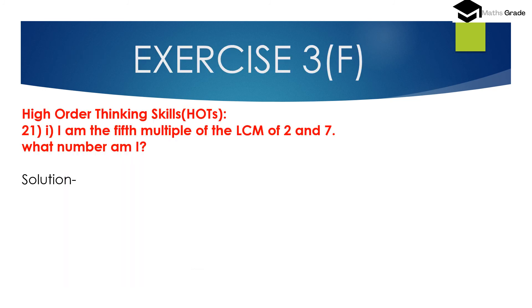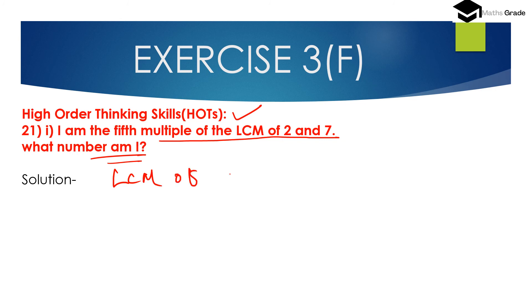Question number 21, first bit. High Order Thinking Skills (HOTS) question: 'I am the 5th multiple of the LCM of 2 and 7. What number am I?' To find this, first find the LCM of 2 and 7. Since 2 and 7 are coprime, LCM of 2 and 7 is 2 multiplied by 7, which is 14.